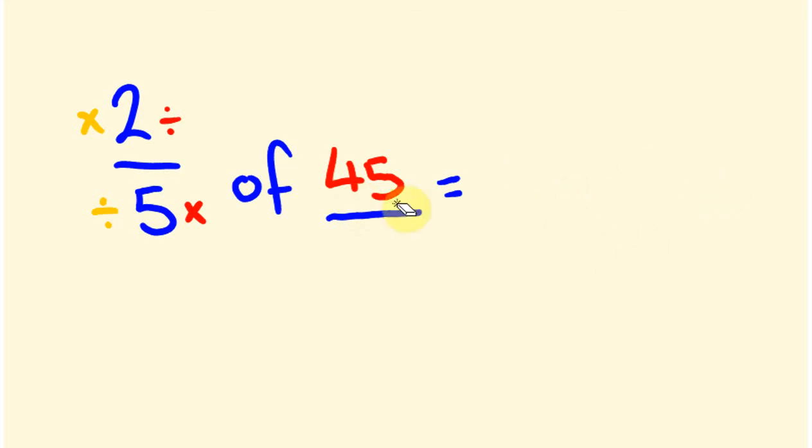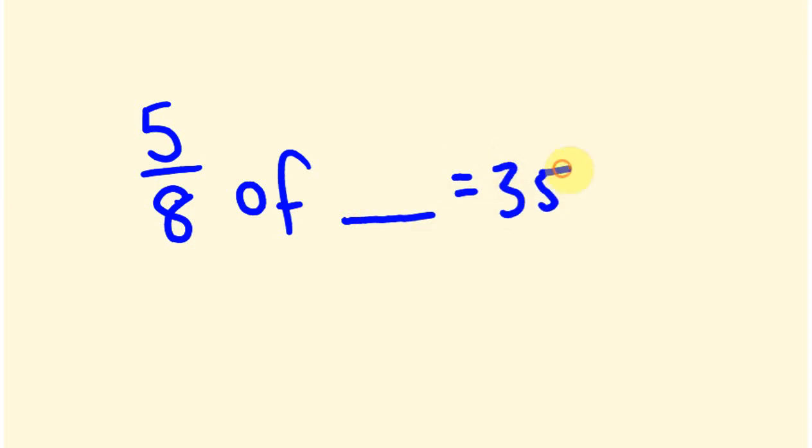Let's have a look at one more of these. These are really simple, right? Say we had 5 eighths of Mr. Unknown Number here and that is equal to 35. Again, at the moment, be thinking, this is our dividing number, this is our timesing number, so we're going to be doing the opposite. We're going to go 35 divided by 5 and we're going to be timesing our answer by 8.